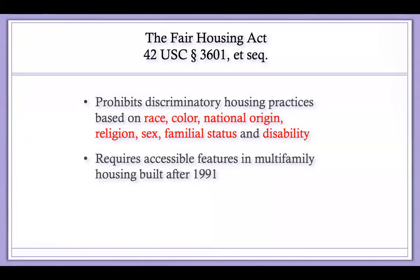The Federal Fair Housing Act prohibits discriminatory housing practices when they're based on membership in seven protected categories: race, color, national origin, religion, sex, familial status, and disability. That's the main focus of today's presentation.